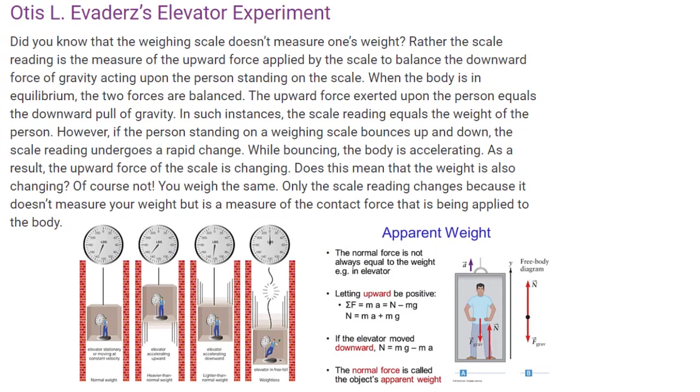Otis Elevators is Elevator Experiment. Did you know that the weighing scale doesn't measure one's weight? Rather, the scale reading is the measure of the upward force applied by the scale to balance the downward force of gravity acting upon the person standing on the scale. When the body is in equilibrium, the two forces are balanced. The upward force exerted upon the person equals the downward pull of gravity. In such instances, the scale reading equals the weight of the person.